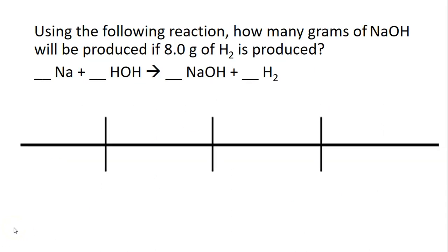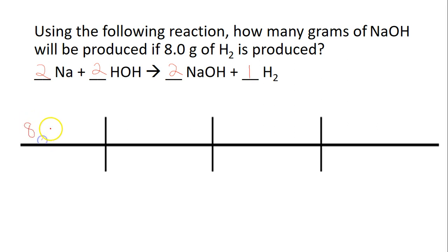Before you watch this next part, I want you to pause it and try to solve this problem, then restart the video to check your work. Before I can do anything, I've got to make sure this is balanced. I see 1 H here and 2 on the right side, so I'm going to make that 2. That gives me 2 OHs here and 2 NAs over here, and then we're balanced. I'll go ahead and write my 1 here. Now we're going to write our given in the top left box: 8.0 grams of H2.